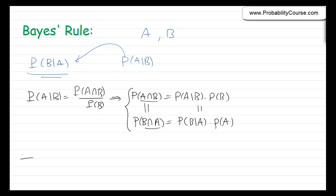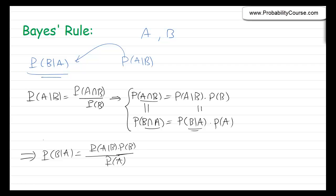From here, I can obtain probability of B given A. Probability of B given A is equal to probability of A given B times probability of B divided by probability of A. That's the Bayes' rule. As I said, it's very simple, but at the same time very, very important.